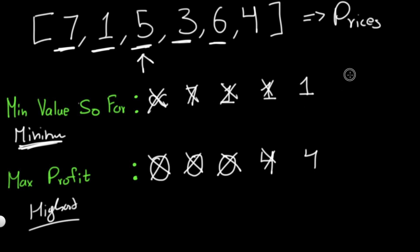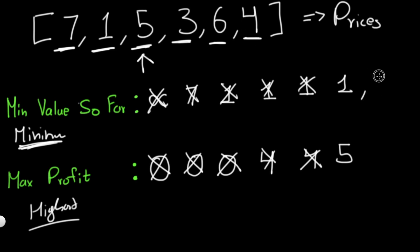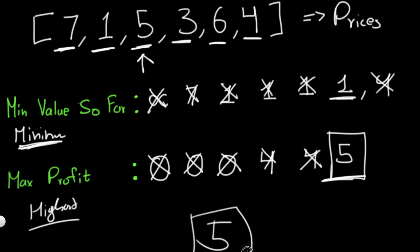Now we have six. Six is bigger than one, so we stay with one as minimum. If we sell now: six minus one equals five. Five is bigger than four, so we update max profit from four to five. Finally, we have four: four is greater than one, so we stick with one. Four minus one gives a profit of three, and three is less than five. So our maximum profit remains five, which is what we return.